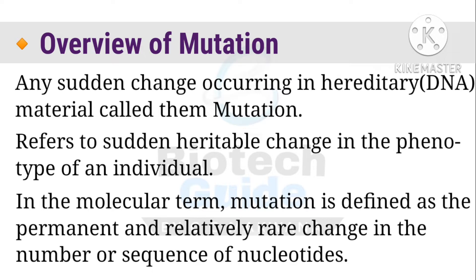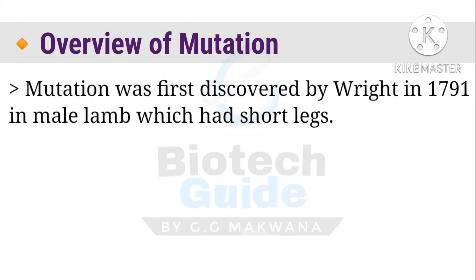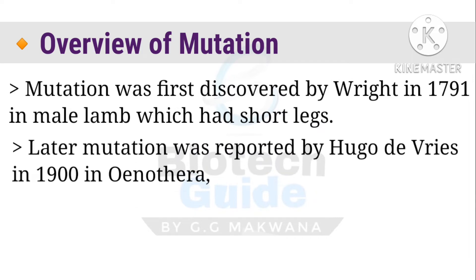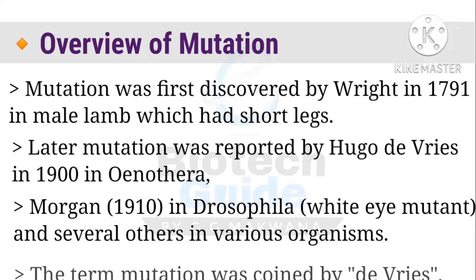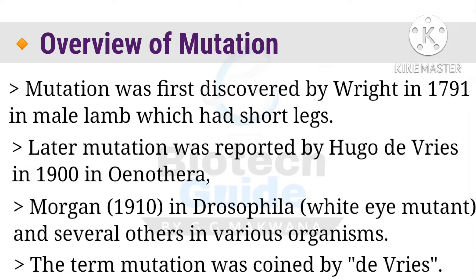Now, who first discovered mutation? In 1791, it was identified in a male lamb which had short legs — here the lamb is from the genome of a sheep. Other discoveries were reported by Hugo de Vries in 1900 in Oenothera, which is a genus of North American herbs or plants with yellow flowers and erect buds. A third discovery was by Morgan in 1910, who found white eyes in Drosophila and several other organisms. The term 'mutation' was coined by de Vries.